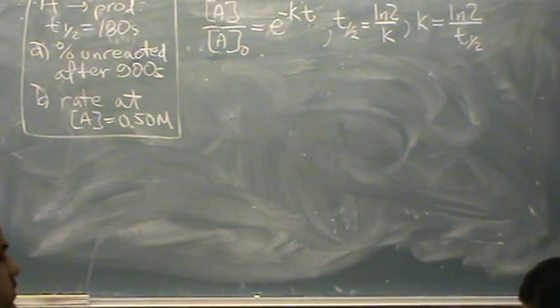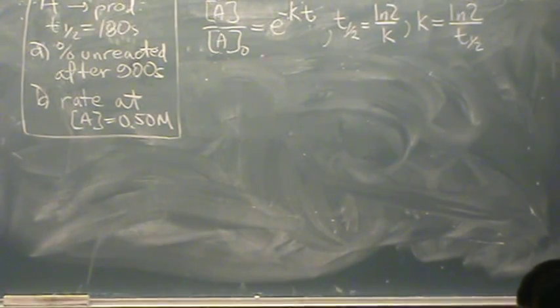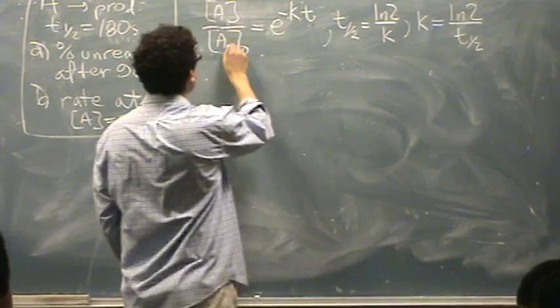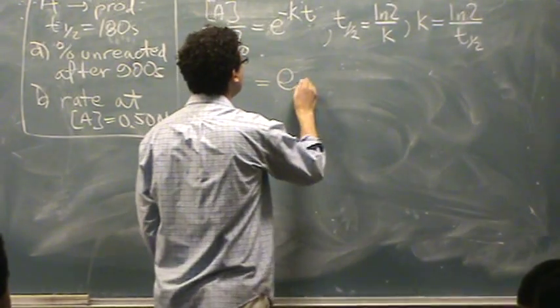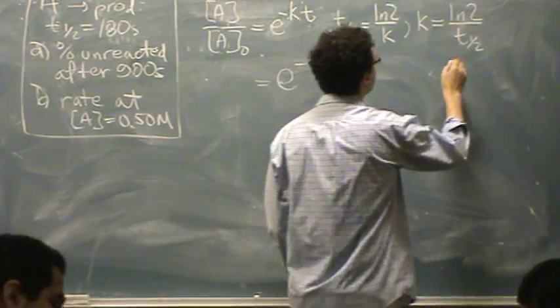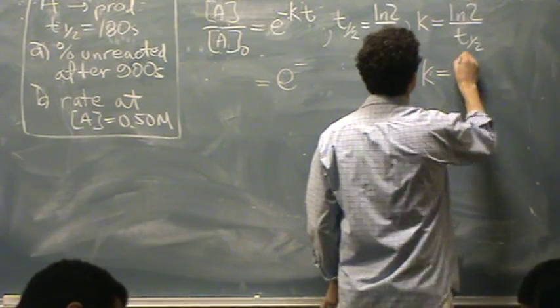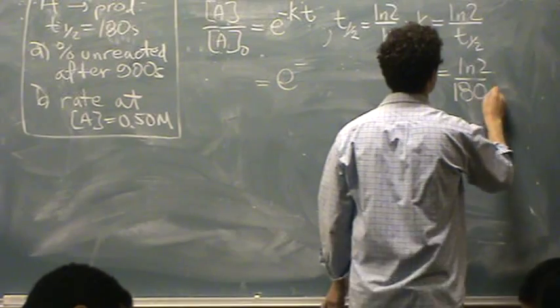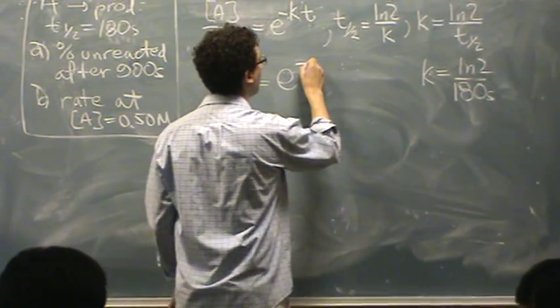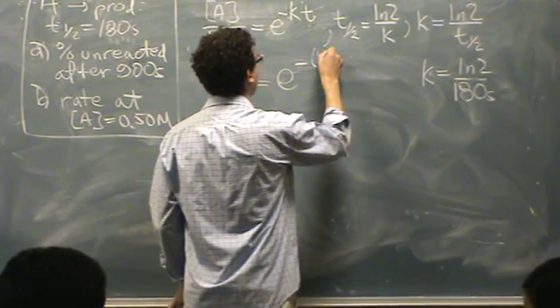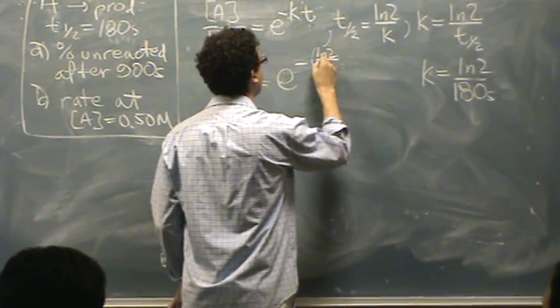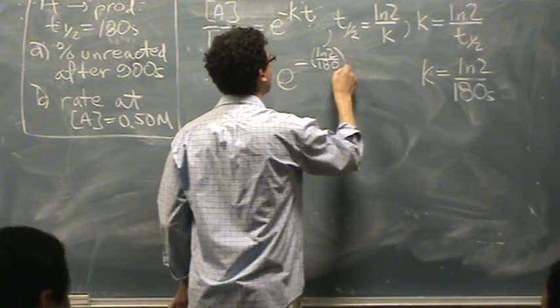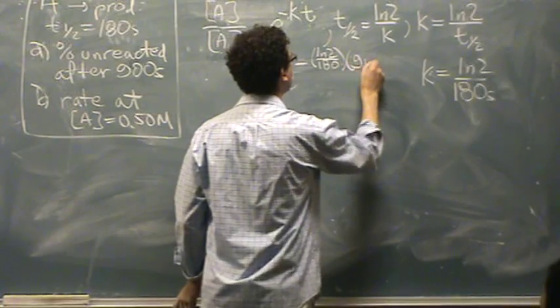Alright, now what I'm going to do is just plug it in. So I want that ratio. It's e to the minus k. K is going to be natural log of 2 over 180. So e to the minus natural log of 2 over 180 times the time, which is 900.